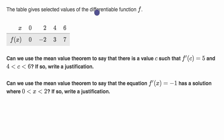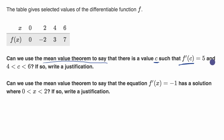The table gives selected values of the differentiable function f. Can we use the mean value theorem to say that there is a value c such that f prime of c is equal to five, and c is between four and six? If so, write a justification.